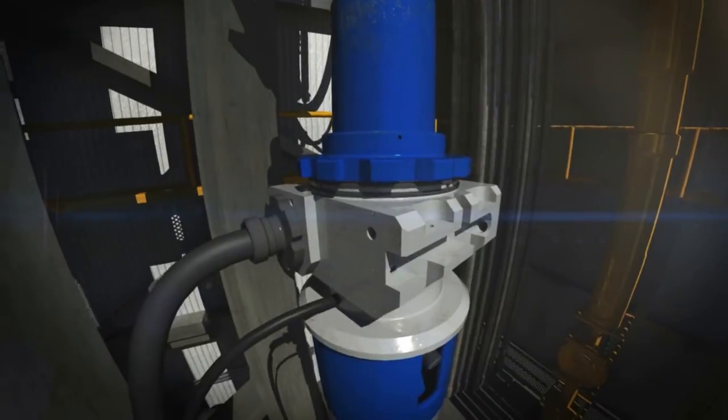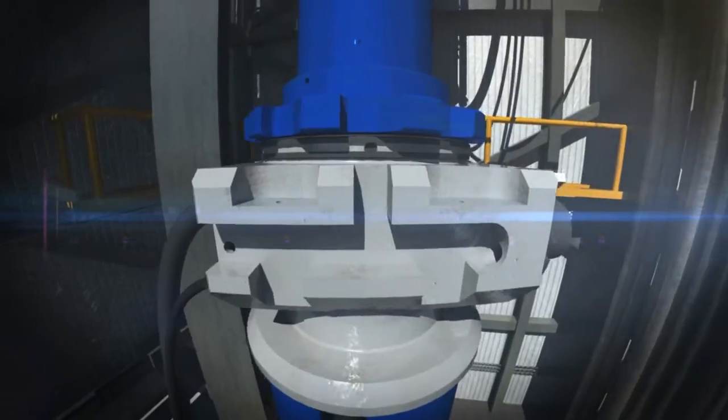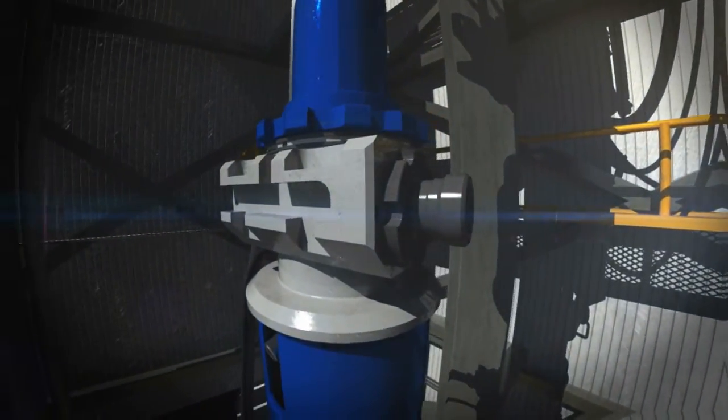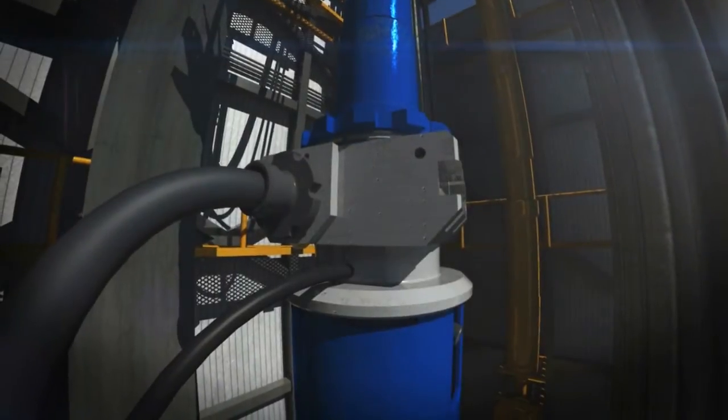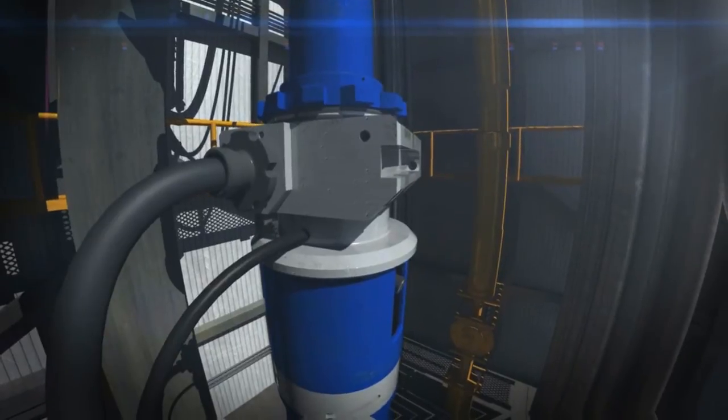Once in position, the cementing line and pneumatic line can be connected. The cementing head is powered by rig air through a single pneumatic hose connected near the cementing line inlet. This air line can be tethered to the cementing line, reducing the risk of damage during cementing.